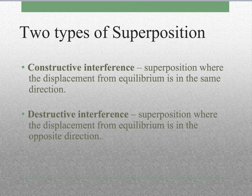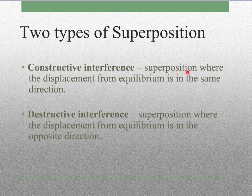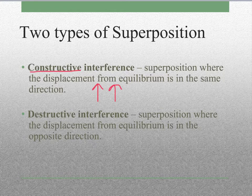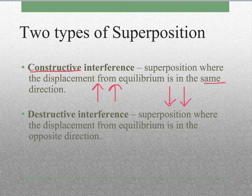The light spots are called constructive interference. This is superposition where the displacement from equilibrium is in the same direction. So if one wave is going up and the other wave is going up, we get constructive interference. We also get it if one wave is going down and the other is going down — as long as they are in the same direction, it is constructive interference.